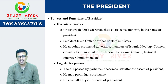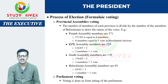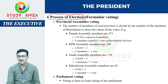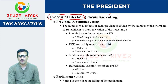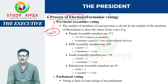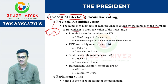Yeh powers and functions hain, but hamaara major concern yeh process of election hai — process of election of president. Usme jo major formula hai, woh formulaic voting hai — that is the major concern. Ab provincial assemblies — yeh units hain — yeh units kis tarah se participate karte hain is election ke andar. The number of members of each province is divided by the number of members of Balochistan to draw the ratio of votes.